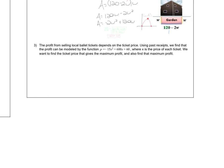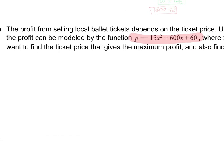Last one. The profit from selling local ballet tickets depends on the ticket price using past receipts. We find that the profit can be modeled by the function p = -15x² + 600x + 60, where x is the price of each ticket. We want to find the ticket price that gives the maximum profit. Also find what is that maximum profit. So again, we have a situation where we have a downward opening parabola. They give us the equation and they task us with finding what is the maximum value.